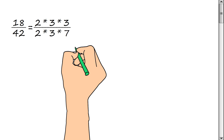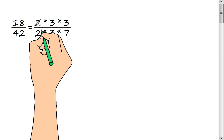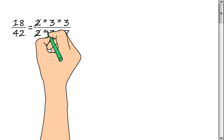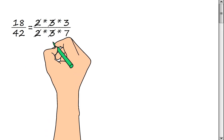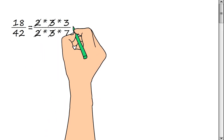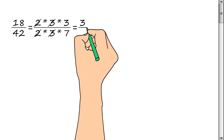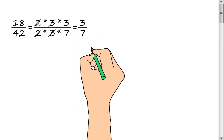Let's cancel the common factors: 2 and 2, 3 and 3. Then we get 3/7ths.